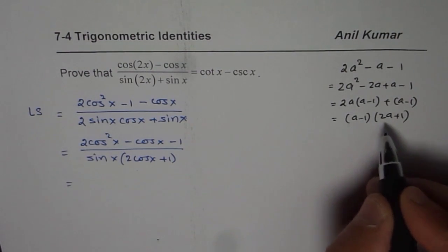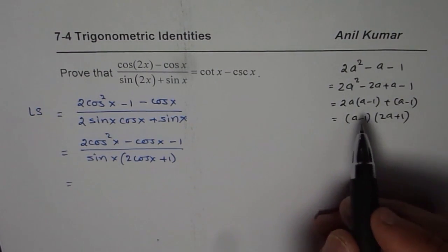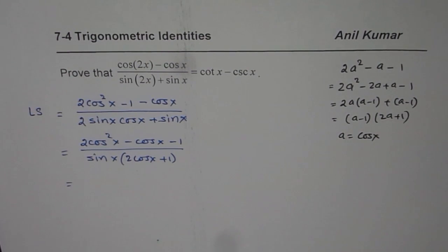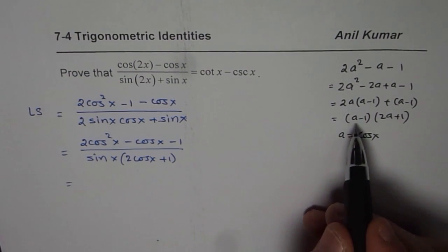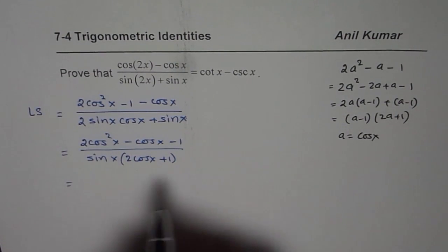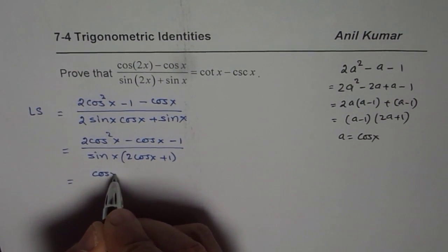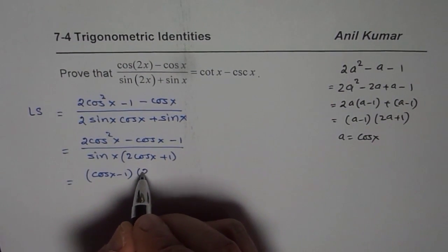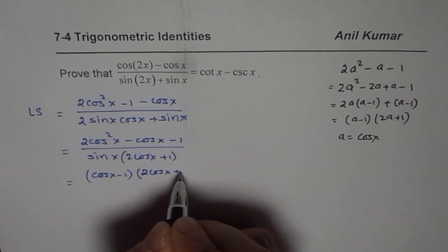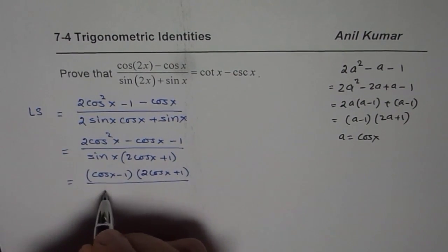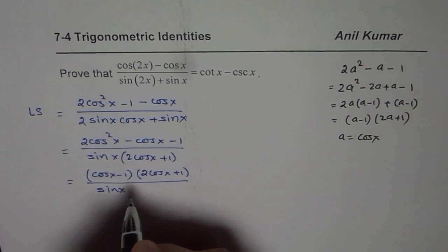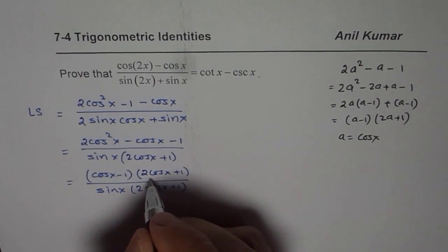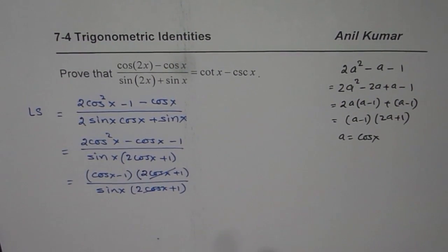Some students are really struggling with factoring, so I just use this. Now in this case, a for us is cos x. So we can write this as cos x minus 1 times 2 cos x plus 1, divided by sin x times 2 cos x plus 1. So we can see 2 cos x plus 1 cancel out.